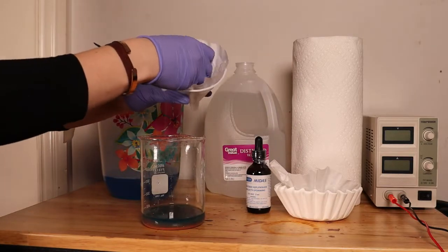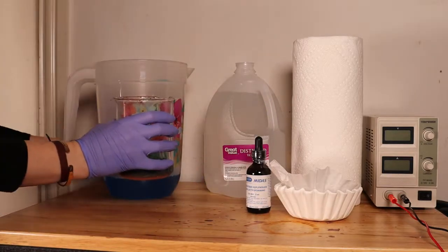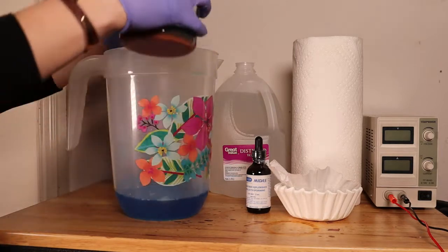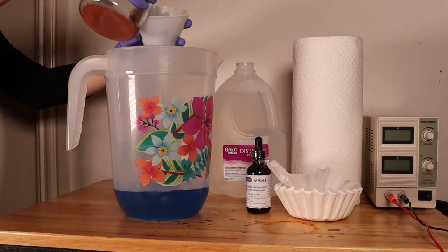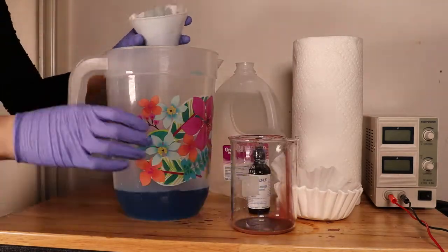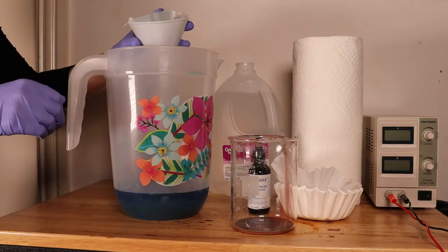The next step is with your funnel, you can use two to three coffee filters. You put it inside your funnel and you keep pouring. I try not to keep pouring so that that sludge will stay in the bottom of the beaker.